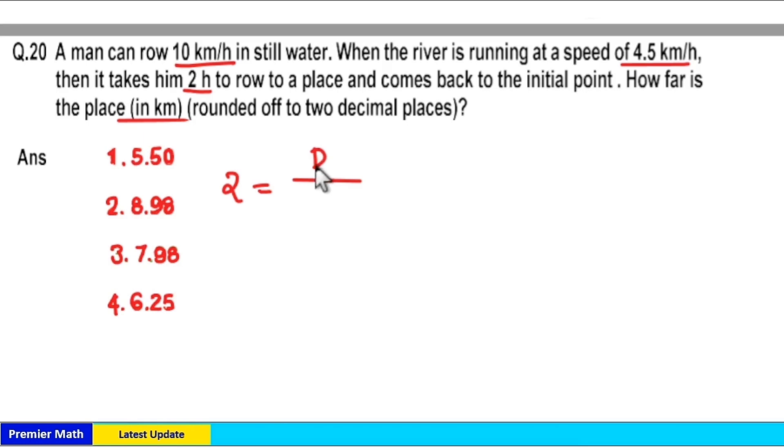So downstream time is equal to distance d divided by downstream speed, which is 10 plus 4.5, that is 14.5. Downstream speed means speed of man in still water plus speed of river. And here upstream time equals distance divided by upstream speed, which is equal to 10 minus 4.5, that is 5.5.